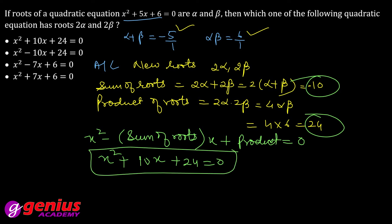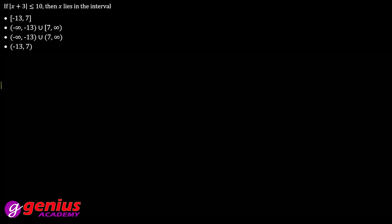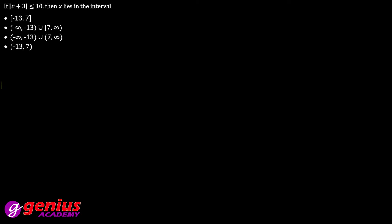Last question. Mod of x plus 3 less than equal to 10. If we change the mod, minus 10 less than equal to x plus 3 less than equal to 10. So minus 10 minus 3 less than equal to x less than equal to 10 minus 3. That means minus 13 less than equal to x less than equal to 7. So x belongs to minus 13 and 7.